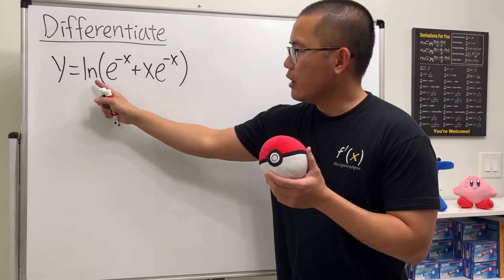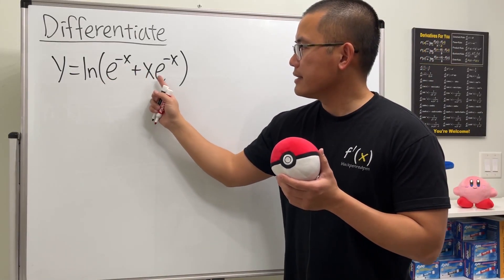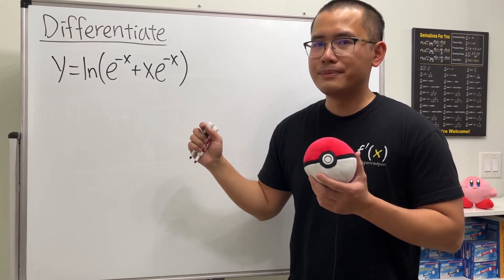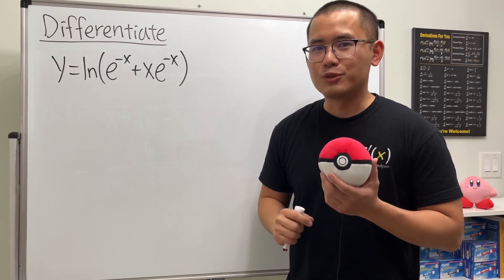Let's see how we can differentiate ln of e to the negative x plus x times e to the negative x. Before anything, let's do algebra first.